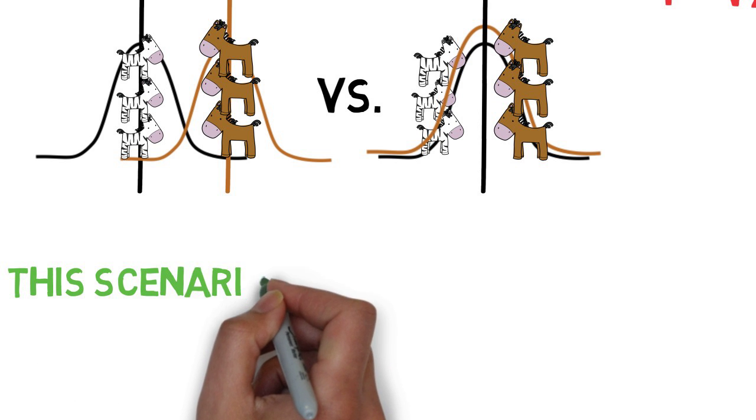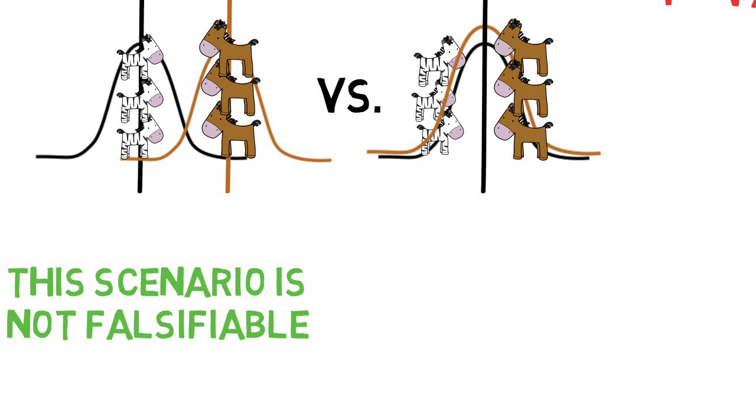The problem we run into is that the idea we've proposed, as we have stated it, is not really refutable. In order to falsify the idea that horses and zebras are a different size, you'd have to show the opposite, i.e. you'd have to show that the sizes of horses and zebras are not different, and any apparent differences you observe in your sample are down to random chance.